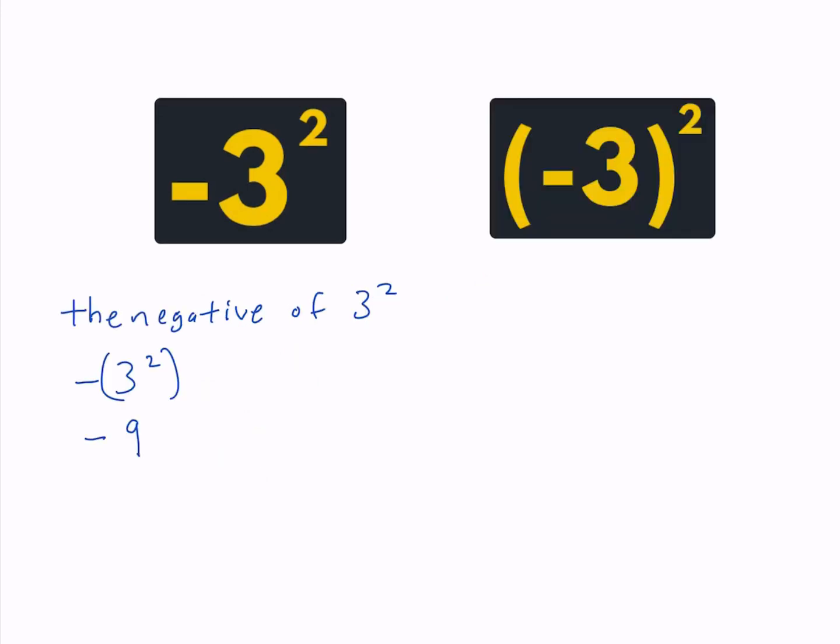Now let's look at the right hand side. Since the negative 3 is in parentheses, what the right hand side means is the square of negative 3. Since a negative times a negative is a positive, on the right hand side we get 9.